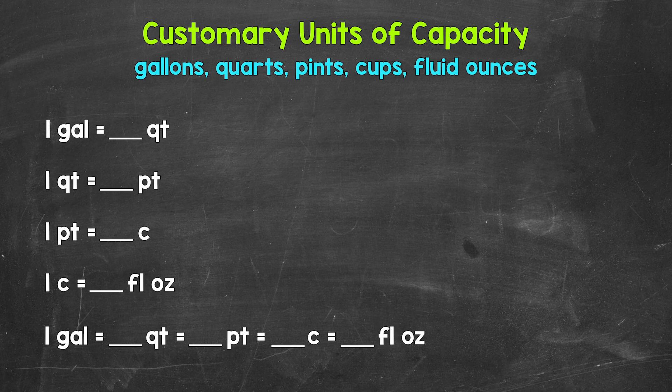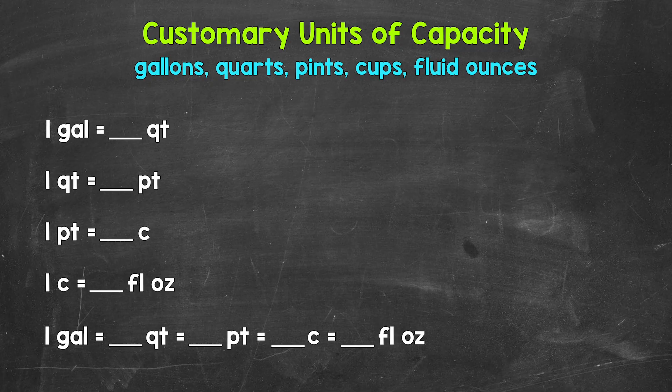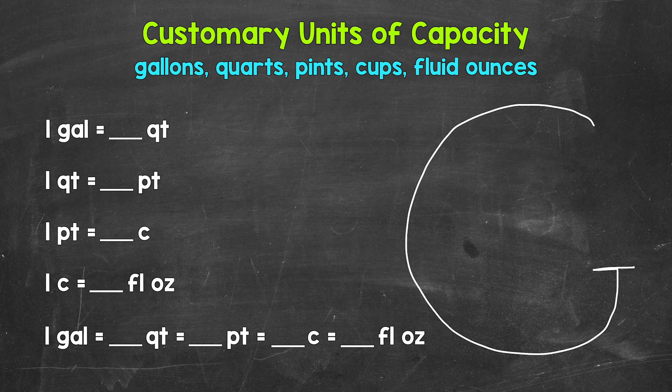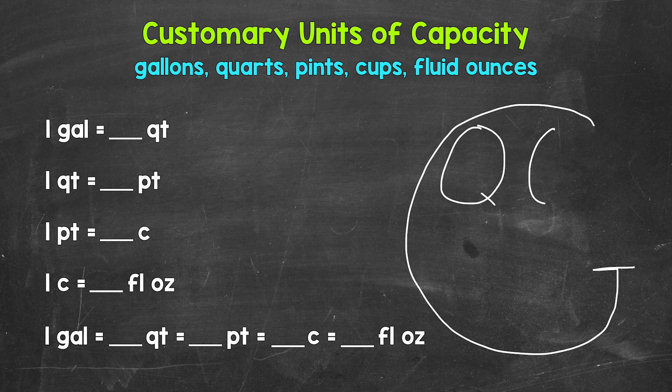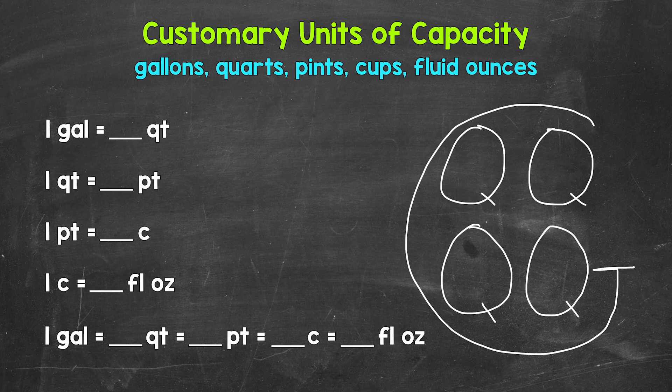Let's jump into this and we're going to start with a big G to represent a gallon. Next, we have quarts and one gallon equals four quarts, four quarts in a gallon. So let's fill this gallon with four Qs to represent quarts. So going over to the left here, one gallon equals four quarts.